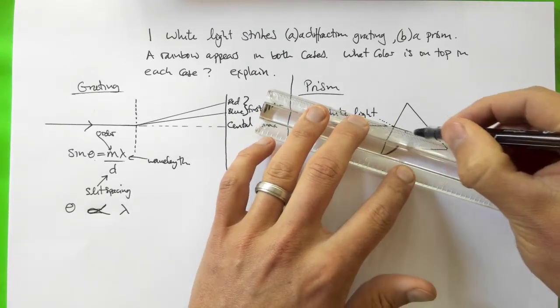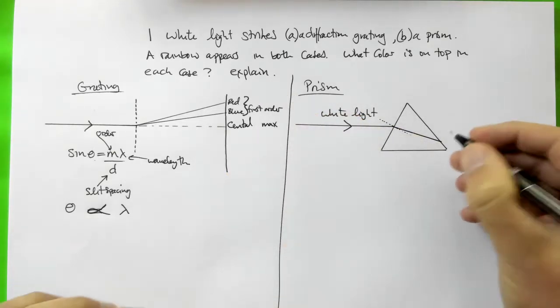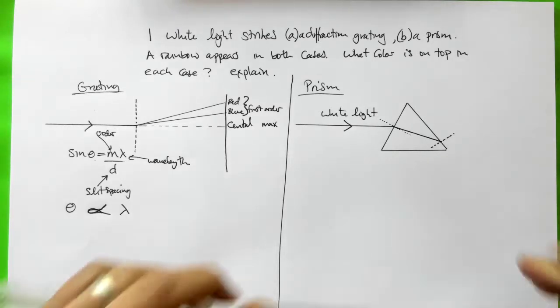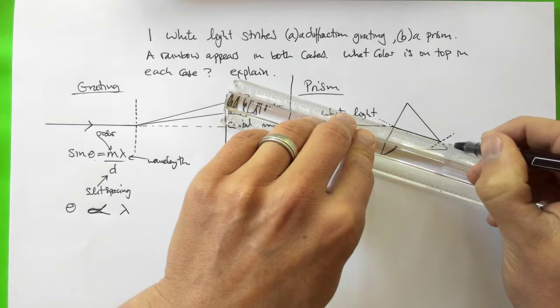So here is a ray bending towards the normal. And as it continues to pass through the prism it goes in a straight line. And then where it exits it will now bend away from the normal. So here's the normal.